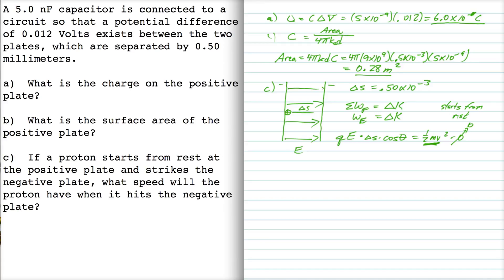Now we can use this formula here for calculating work because the field is uniform and the displacement angle is the same and so forth. It doesn't change over time. So I can just write Q, the charge of the proton, times the electric field, times the displacement, is equal to the final kinetic energy.